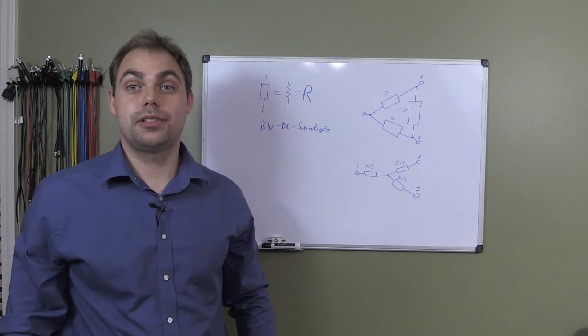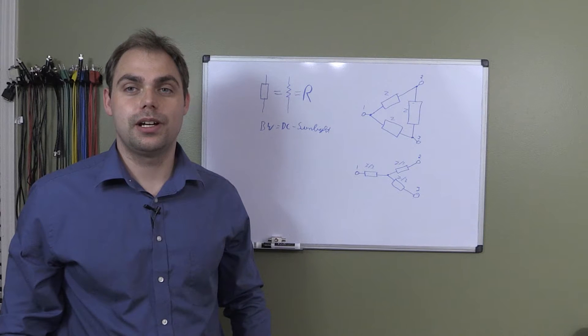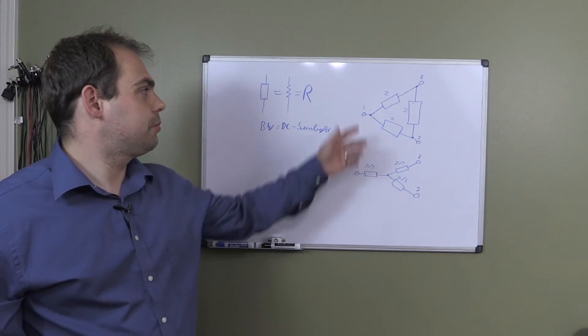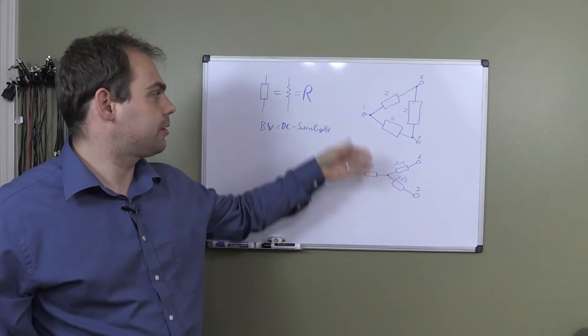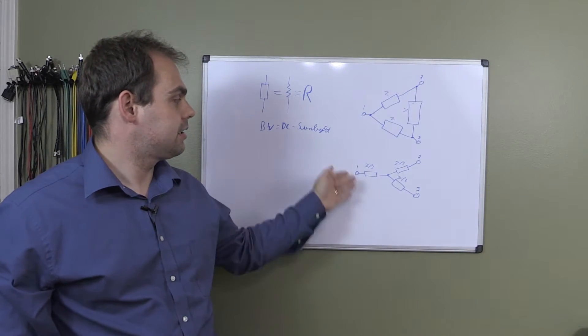6dB splitters or 6dB combiners, because you can use them both ways around. If we're looking at those two-port examples that I have here, we have an input port. If we're looking at it as a splitter, our input signal goes in and comes out of two ports.